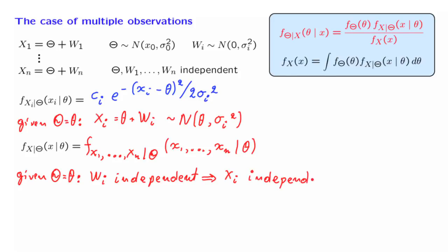And since the wi's are independent and the xi's are obtained from the wi's by just adding a constant, this means that the xi's are also independent in this conditional universe. Once I tell you the value of theta, because the noises are independent, the observations are also independent.